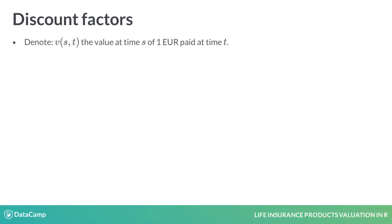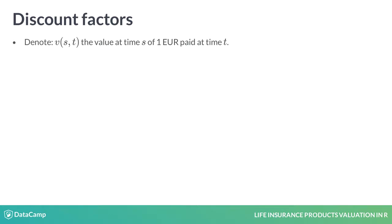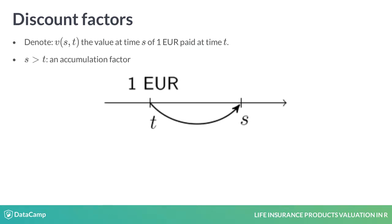Let's fix two time points, s and t, and introduce the notation vst for the value at time s of 1 euro at time t. The second argument, t, refers to the point in time when you consider the 1 euro. If the first argument, s, is smaller than t, then vst is a discounting factor. But if s is larger than t, then vst is an accumulation factor such that 1 euro at t grows to vst euro at time s.